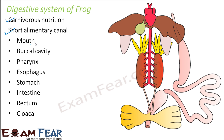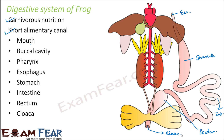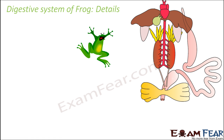Let us locate each part in the diagram. The tube-like structure visible here is the esophagus, which gradually leads into the stomach. The stomach then connects to the intestine, and the intestine finally leads into the rectum. From the rectum, it opens to the cloacal aperture. This is your digestive system.